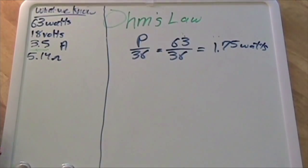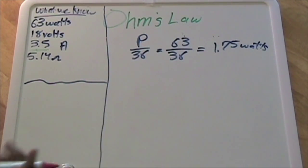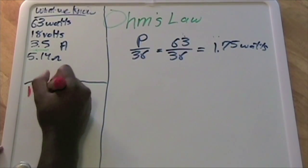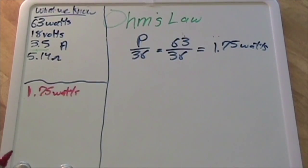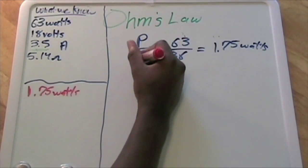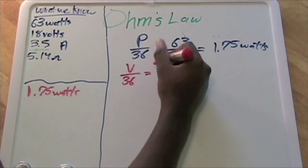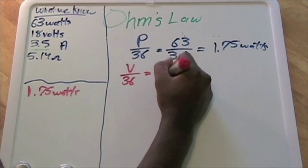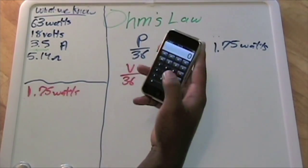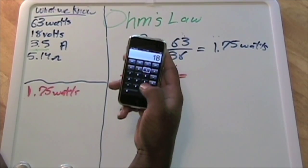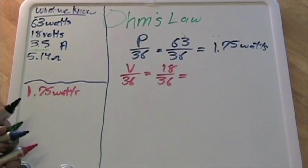We'll do the same thing for the other values. For the volts, it'll be V over 36, which equals 18 divided by 36. Putting that in our calculator, 18 divided by 36 gives us 0.5 volts per solar cell.